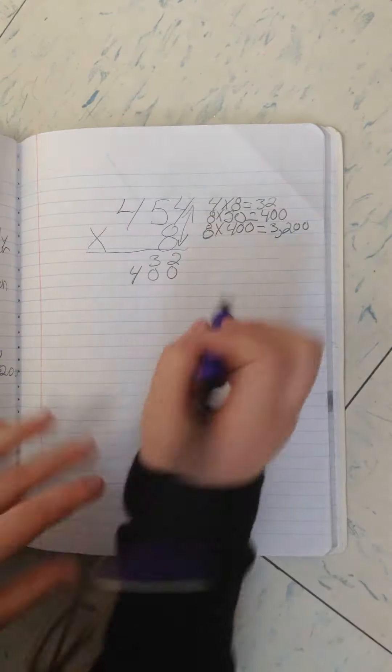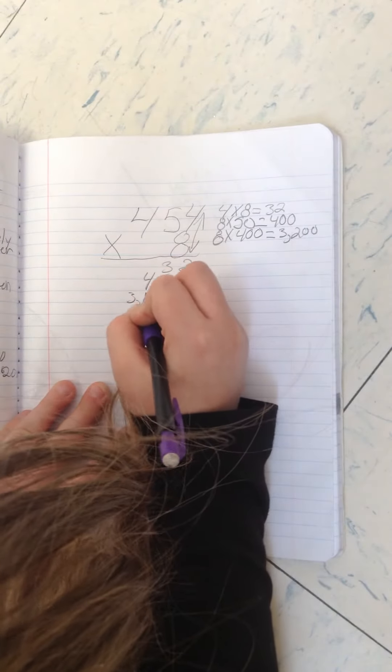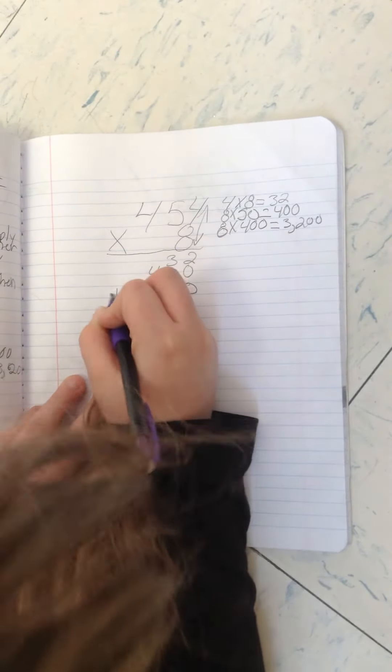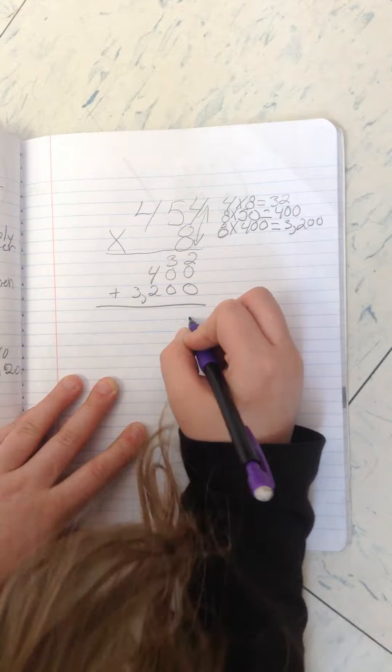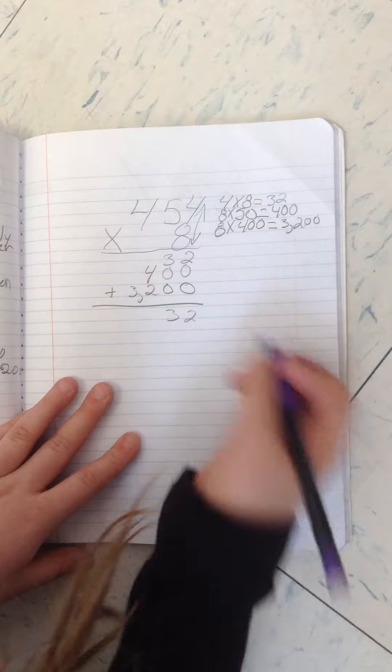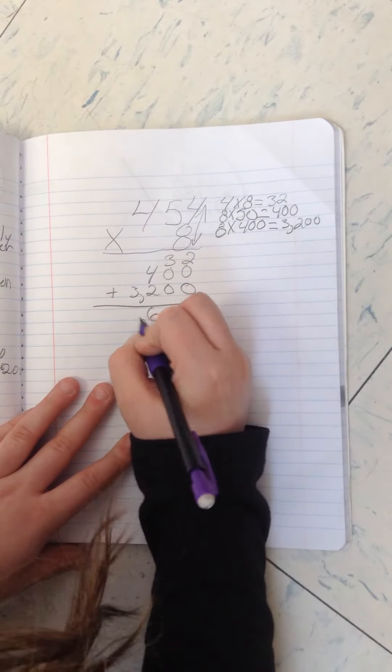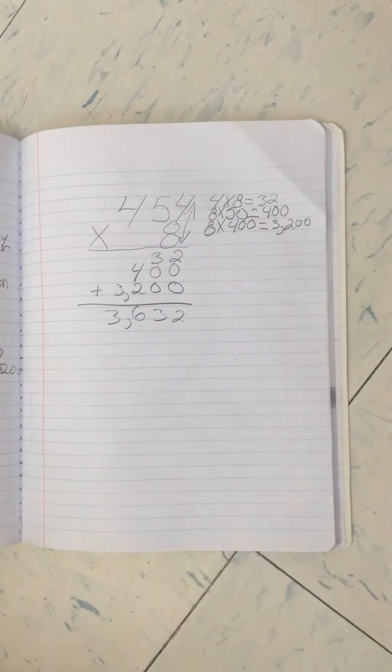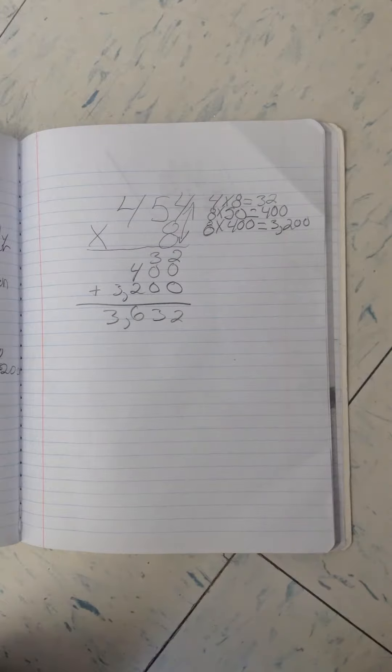So then you put the 3,200 down here and then you add that and 2 plus 0 and 0 is 2. 3 plus 0 and 0 is 3. Then 4 plus 2 is 6. Then 3 plus nothing is 3. So your answer will be 3,632.